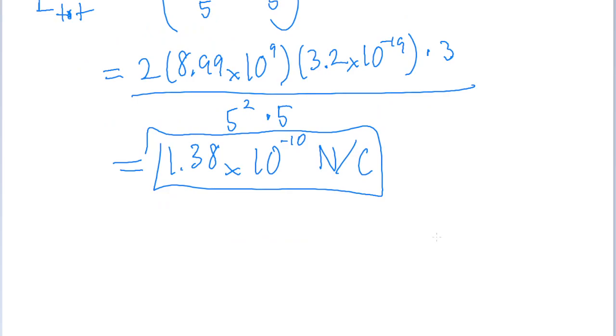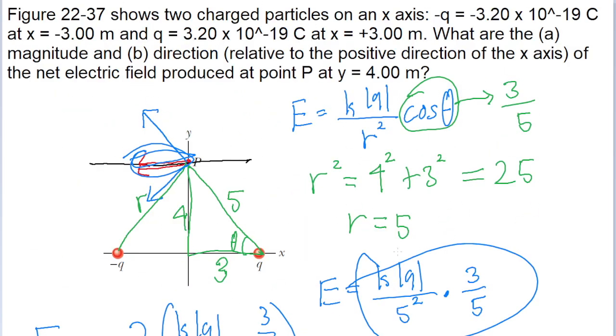Now you might be tempted to say that this answer is wrong and that it should be negative because we can clearly see that the net field is pointing to the left in the negative direction on the x-axis, but because the problem is only asking for the magnitude of the net field, that means we make it positive because you can't have a negative magnitude.